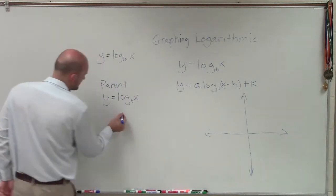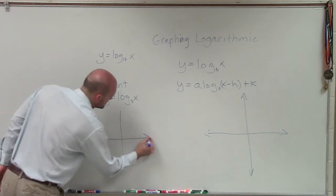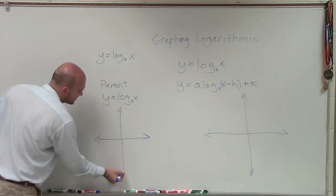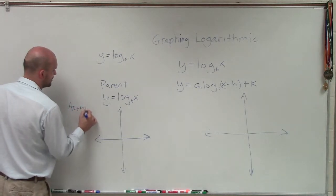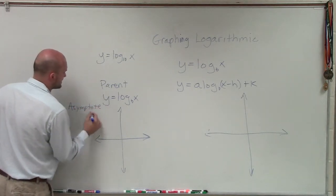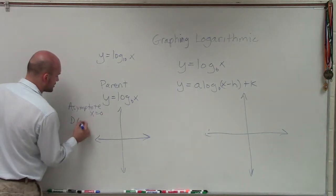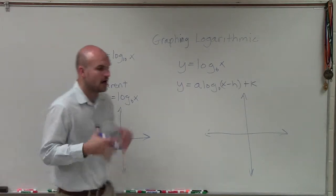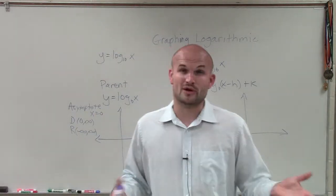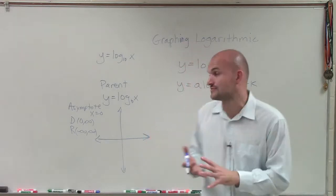Now, the one thing we know is, when we're graphing this, all logarithms, unless we have any kind of transformation, we know that's going to have an asymptote at x equals 0. We know the domain is always going to be from 0 to infinity, and the range is going to be from negative infinity to infinity. That's going to be for our parent graph, and for all logarithmic graphs, unless our graph is transformed.